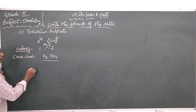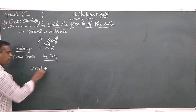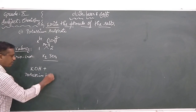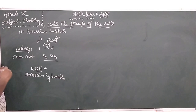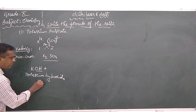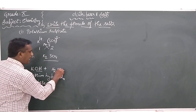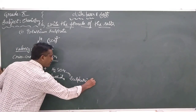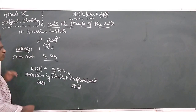Potassium sulfate can be obtained by reacting with sulphuric acid. What is potassium hydroxide? It produces OH- ions when dissolved in water, so it is called a base. Sulphuric acid produces H+ ions, so sulphuric acid is acidic in nature.